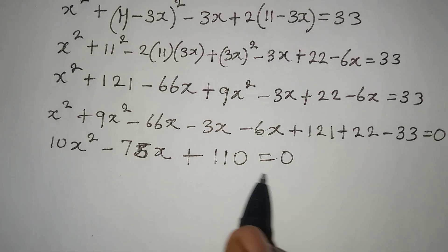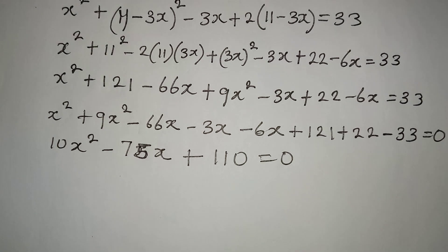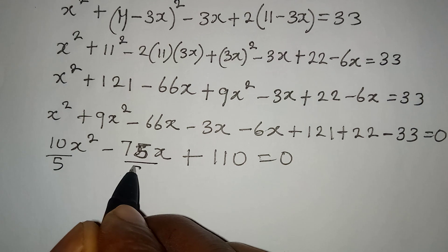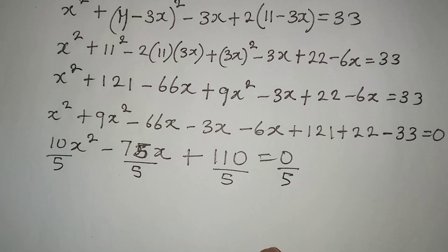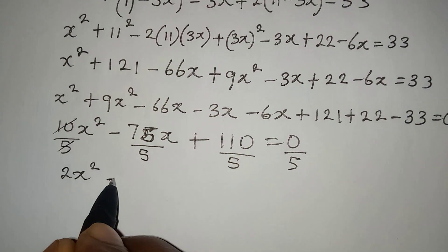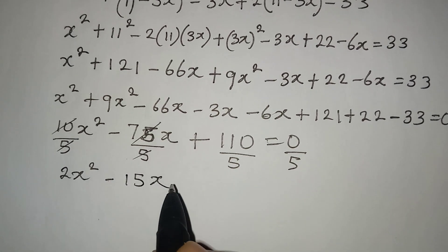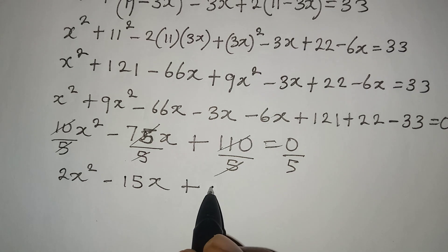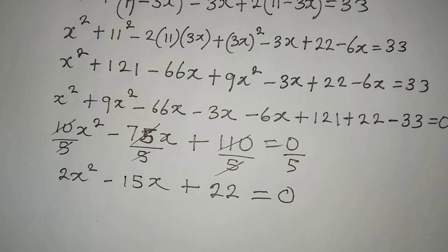We now have a quadratic equation, and 5 can go into all of this, so we can reduce it. Divide everything by 5: 10x squared divided by 5 gives 2x squared, minus 75x divided by 5 gives 15x, plus 110 divided by 5 gives 22. So we have 2x squared minus 15x plus 22 equals 0.